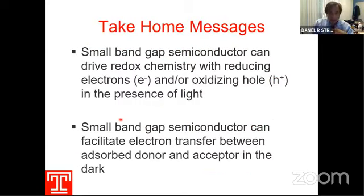There are two key take-home messages. We're going to be looking at small band gap semiconductors with band gaps of maybe three electron volts or smaller. They can absorb visible and ultraviolet light, and you can get excitation of an electron from the valence band to the conduction band, producing an oxidative hole in the valence band and a reducing electron in the conduction band, which can drive a lot of interesting chemistry.